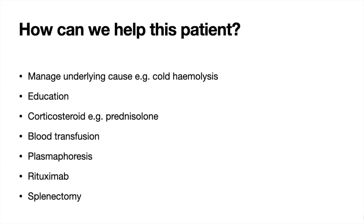Let's think about the treatment options for this patient. The first would be to educate the patient and manage the underlying cause — for example, if the patient had cold hemolytic anaemia, we would explain the condition and advise them to stay warm and wear gloves when going out in the cold. We can also consider medical therapy such as corticosteroids like prednisolone, which will dampen down the immune system and hopefully result in less hemolysis.